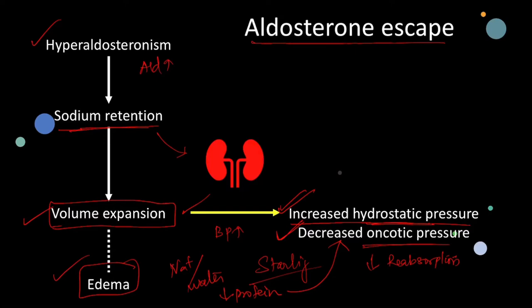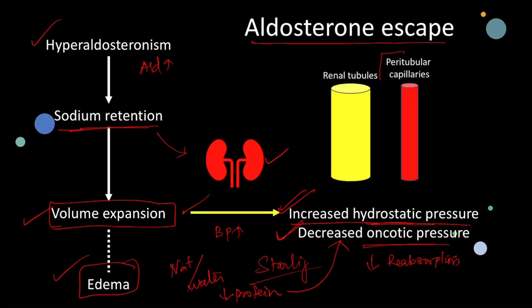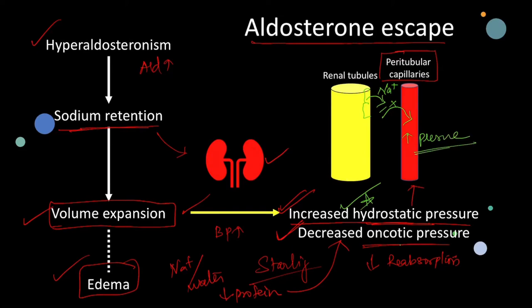Both these factors — increased hydrostatic pressure and decreased oncotic pressure — decrease the reabsorption at the level of capillaries, which leads to edema. But there is a counter mechanism present in the kidneys which limits the volume expansion and prevents edema. In the kidneys, the tubular cells reabsorb sodium along with other electrolytes and deposit it in the interstitial space. The sodium movement from the interstitial space to the capillaries is opposed by higher capillary hydrostatic pressure within the peritubular capillaries. So the higher hydrostatic pressure and lower oncotic pressure decrease the reabsorption of sodium from the tubules, so the sodium deposited in the interstitium diffuses back into the tubular fluid through the paracellular route, and there is increased excretion of sodium. This opposes the original increase in sodium retention by aldosterone.